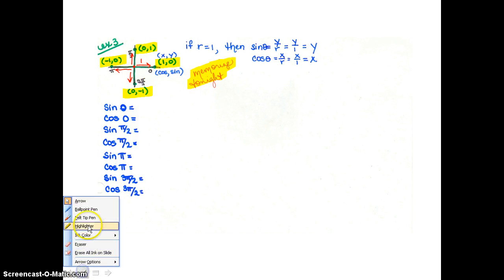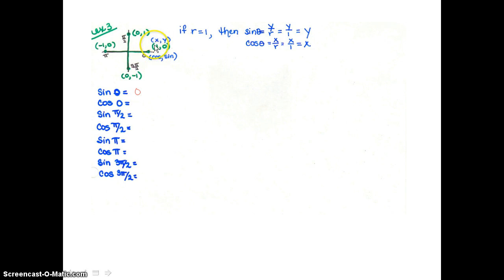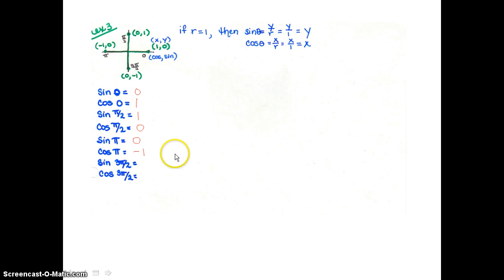For sine at zero, the y value is zero. Cosine at zero is the x value, which is one. At pi over two, the ordered pair is (0, 1): sine is the y value, so sine of pi over two is one; cosine is the x value, so cosine of pi over two is zero. At pi, the ordered pair is (-1, 0): sine is zero and cosine is negative one. At three pi over two, the ordered pair is (0, -1): sine is negative one and cosine is zero.